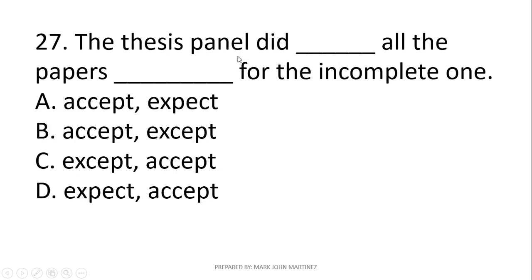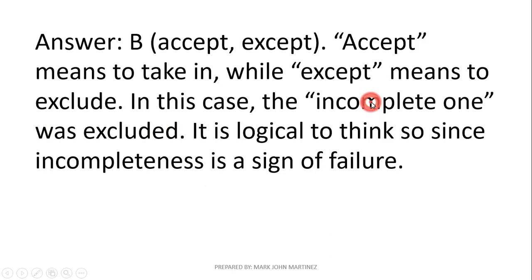Next: The thesis panel did blank on the papers, blank for the incomplete one. The thesis panel accepted all papers except for the incomplete ones. The correct answer is letter B: 'The thesis panel did accept all the papers except for the incomplete one,' because incompleteness is a sign of failure.